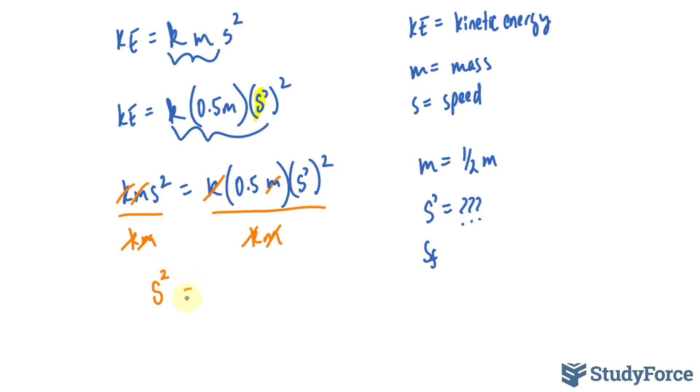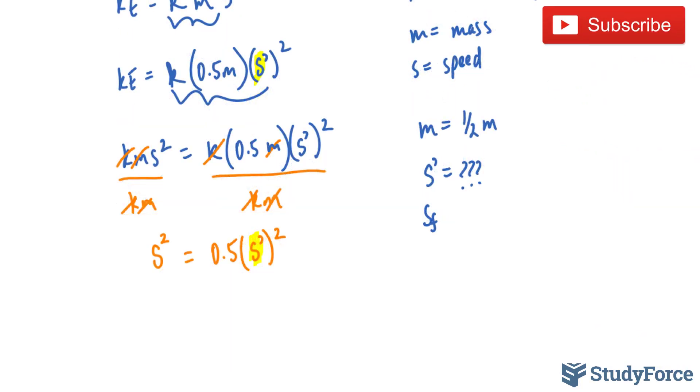The original speed squared is equal to 0.5 S prime squared. What we are looking for is S prime. So now you have to ask yourself, what do we have to do to isolate for S prime?